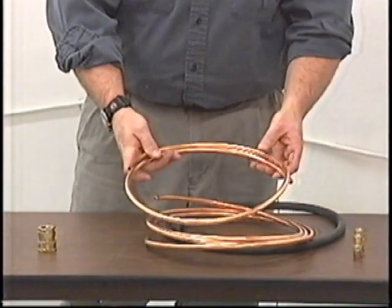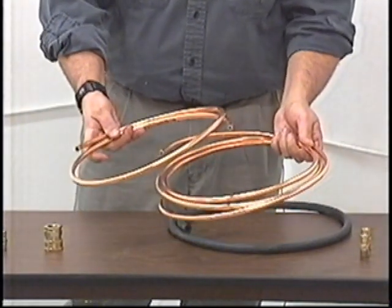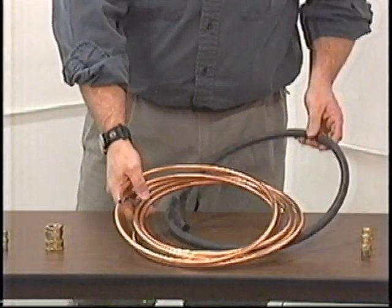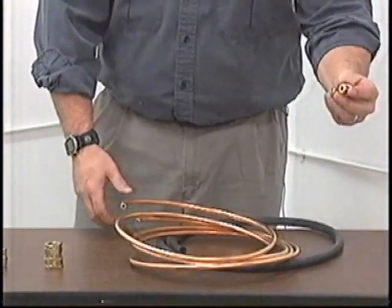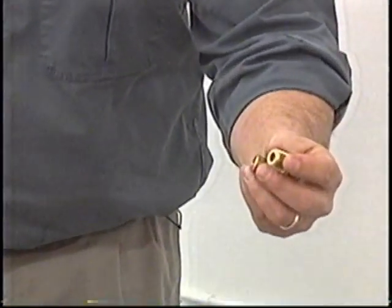Two sets of copper tubing, one long, one short, and a rubber hose for the copper tubing, and two compression fittings for the inlet and outlet of the water jacket.